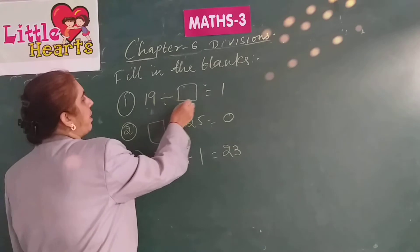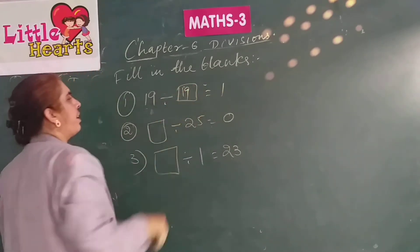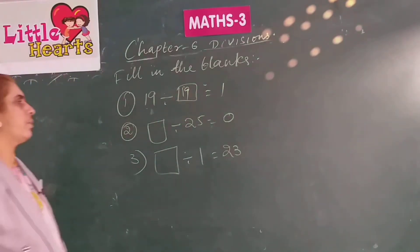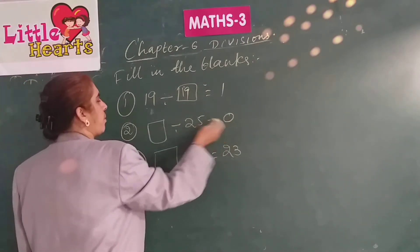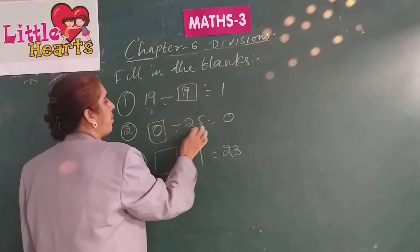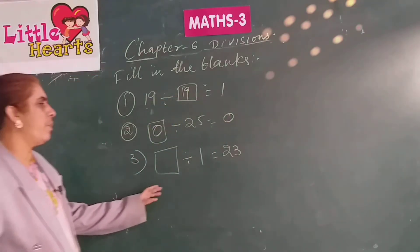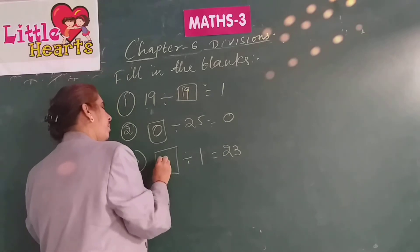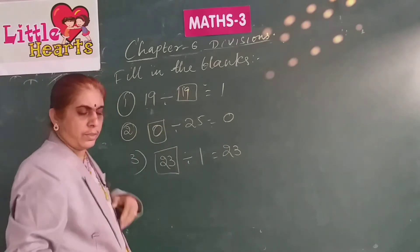19 divided by blank is equal to 1 — when 19 is divided by 19 only, we get 1 as the quotient. 0 divided by 25 is equal to 0 — when 0 is divided by any number, we get 0 as the quotient. Blank divided by 1 is equal to 23 — 23 divided by 1 equals 23.